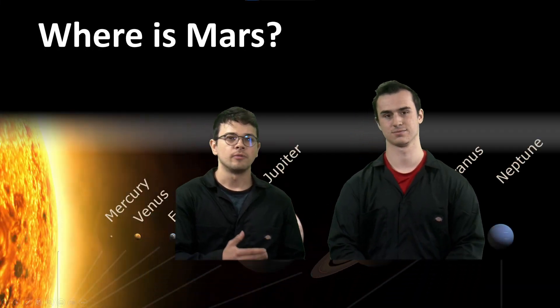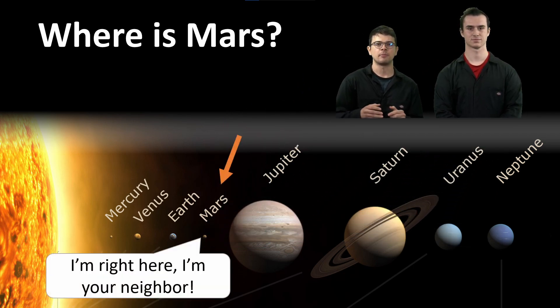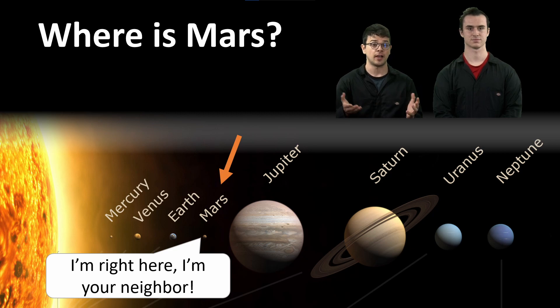So, where is Mars exactly? Well, Mars is the fourth planet in the solar system right after the Earth. And it is also about half the size of the Earth, which means everything is much lighter.